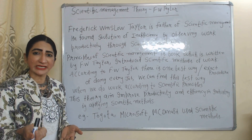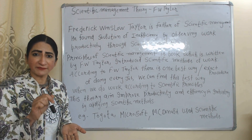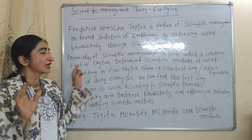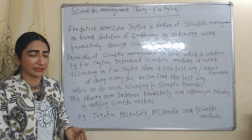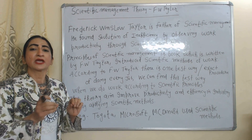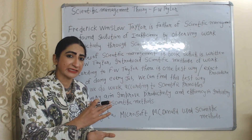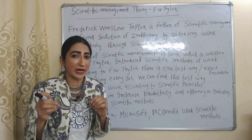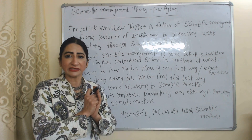Frederick Winslow Taylor is the father of scientific management. He found a solution to inefficiency by observing work productivity through scientific methods. Principles of Scientific Management is a book written by F.W. Taylor, and this book introduces scientific methods of work. According to F.W. Taylor, there is one best way — one exact procedure of doing every job — and we can find this one best way if we do work according to scientific methods.